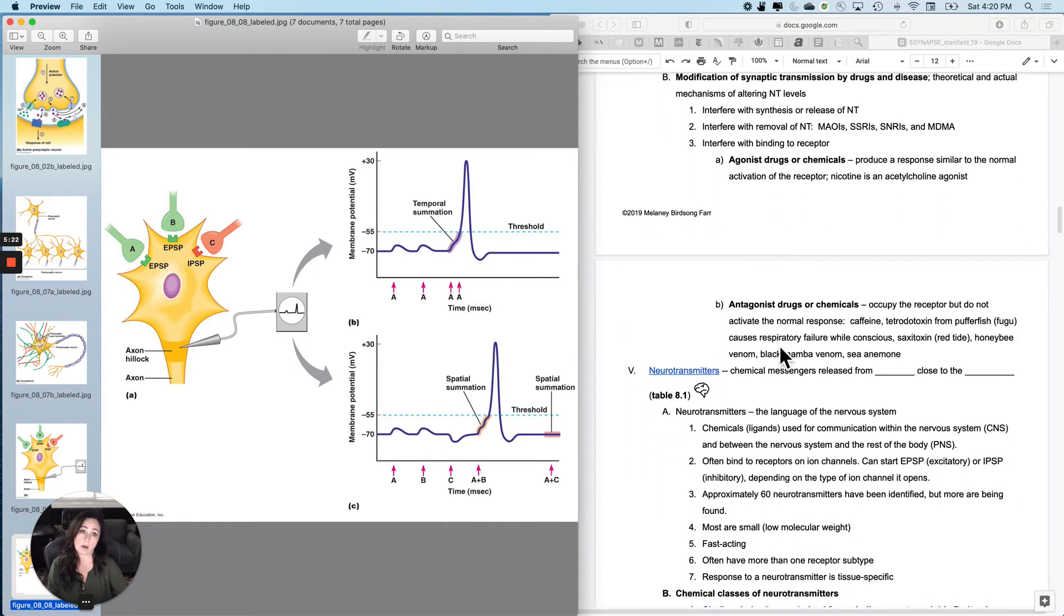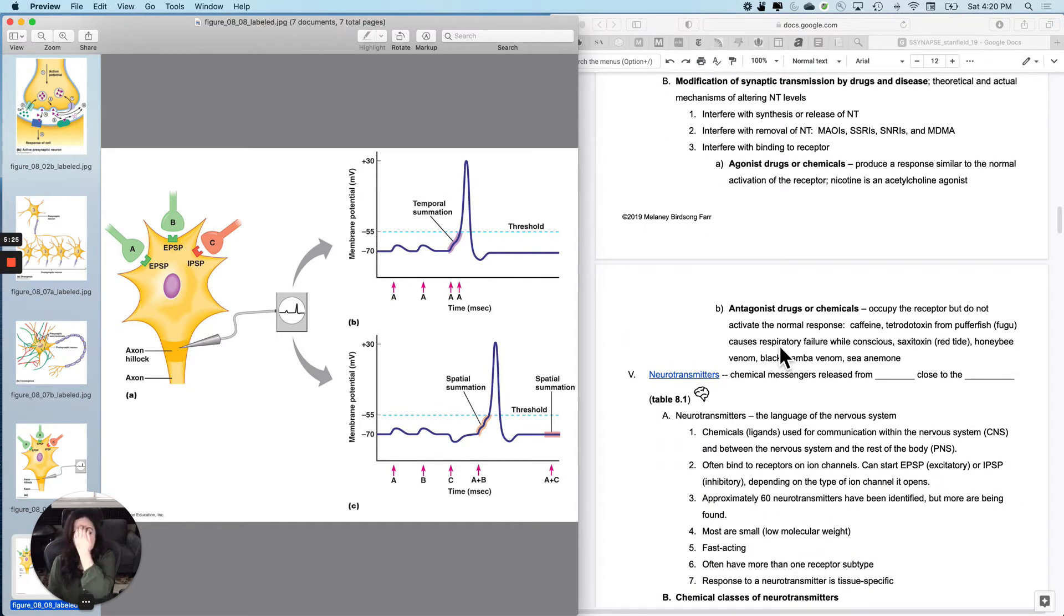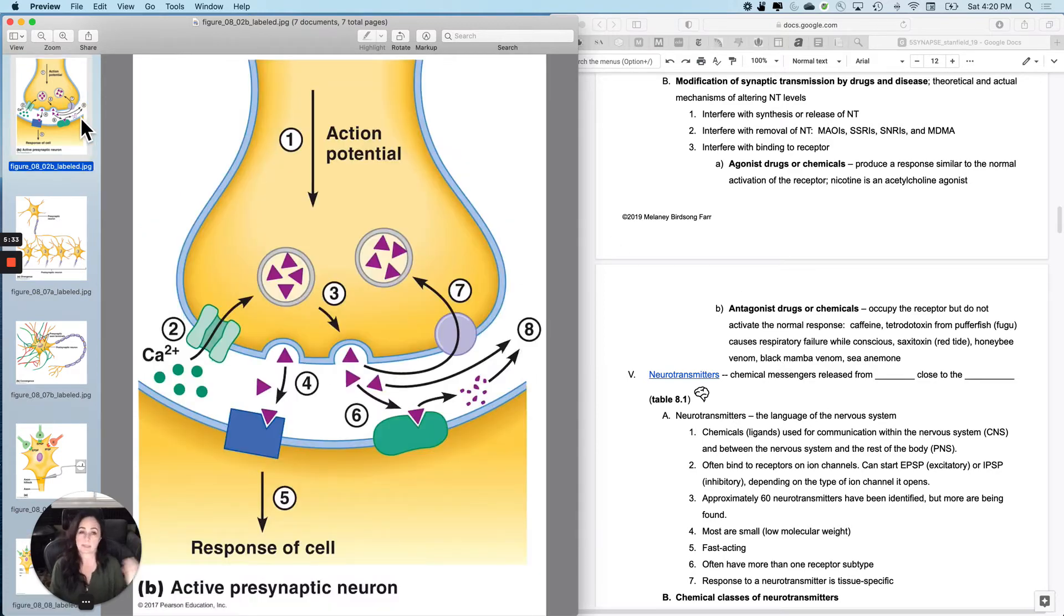Last little tidbit before we get to all different types of neurotransmitters, and we'll be talking about drugs and diseases and that kind of stuff. Let's say that we have a synapse that's not working properly. Let's say I wish that I could be more happy, and it's not this simple, but a bit more dopamine in certain synapses would do that for me. How can I get that to occur? What's theoretically possible? What's possible in actuality?